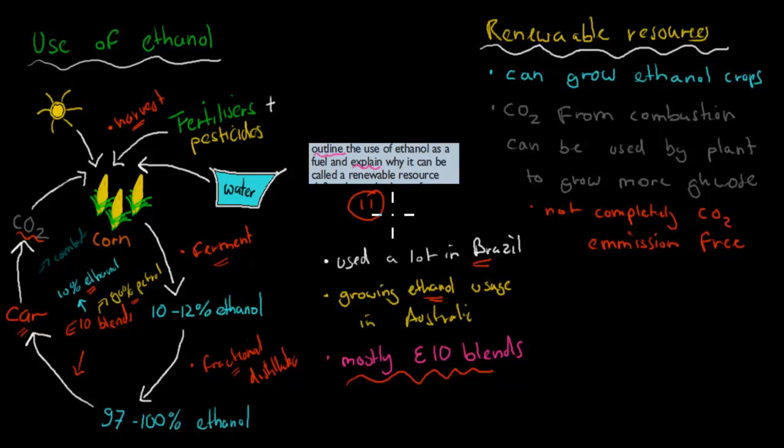Explain why it can be called a renewable resource. We can grow it, so anything that can be grown is renewable. We can make it again. And that CO2 that comes from combustion is then reused to grow the plants, so it's a whole cycle. But it's not complete CO2 emission-free because when we do ferment, we produce some CO2. When we use energy for transport, we release some CO2. So overall, there are some CO2 released, even though CO2 released compared to petrol is a lot less.